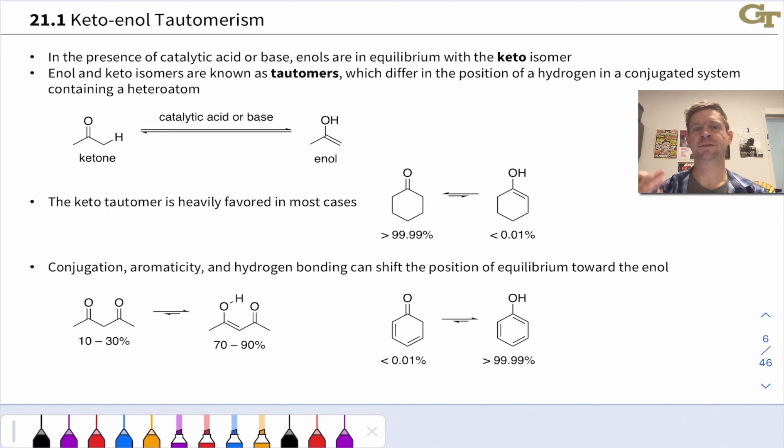But these compounds all have an isomeric form as long as they have an alpha hydrogen in which that alpha hydrogen has moved from the alpha carbon to oxygen with a shift in the double bond from C=O to C=C. This isomeric form with that hydrogen in a different place and the C=C double bond is known as an enol.